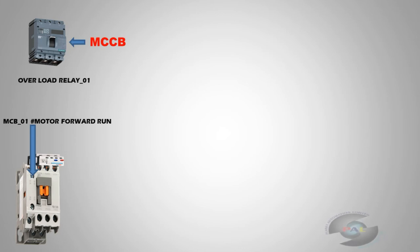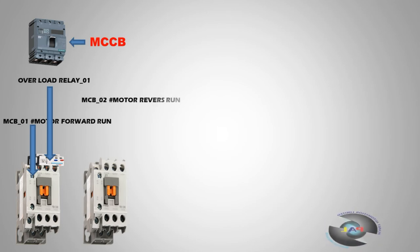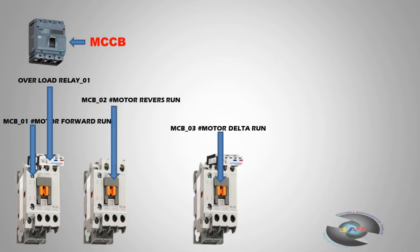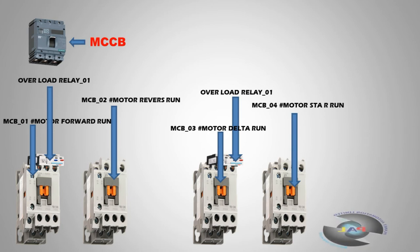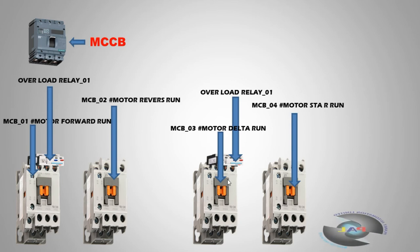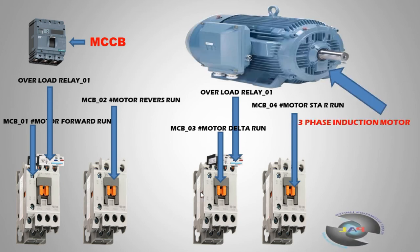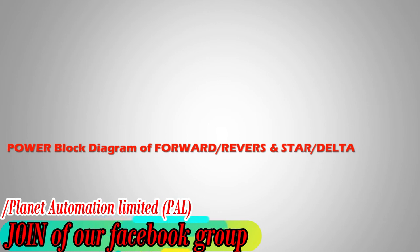This is the delta connection, the overload relay, and MCB for motor star run — for our star running. This is MCB number four. When MCB1 is active, we first start in star and then convert our power to delta. This is the whole system we use for the three-phase induction motor — star-delta and reverse-forward — the power block diagram of forward, reverse, and star-delta step by step.